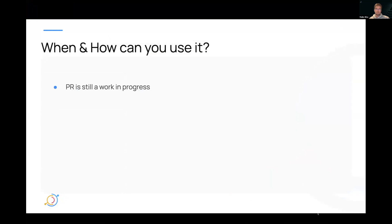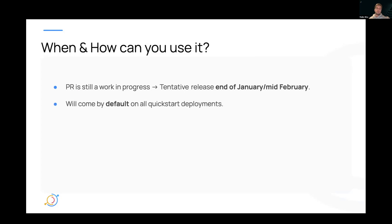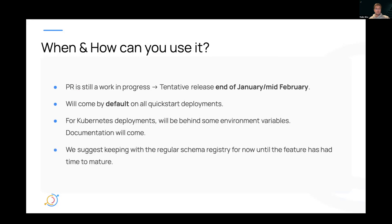When and how can you use it? The PR is still a work in progress, but we're targeting a tentative release in the next release cycle, hopefully. It will come enabled by default on all quickstart deployments. For Kubernetes, this will be locked behind some environment variables, but we will be releasing documentation for anyone who wants to try it out. For now, because this feature is so new, we do suggest keeping the regular schema registry deployment mode — at least in production — for at least one release while we have time to mature this feature.